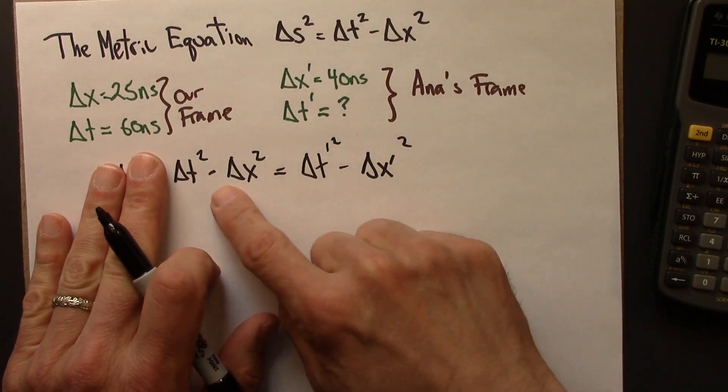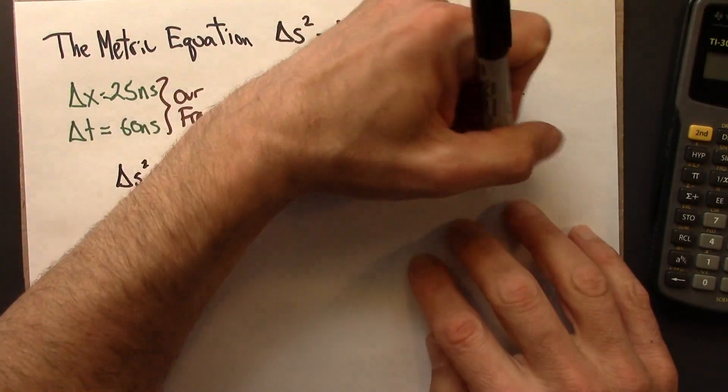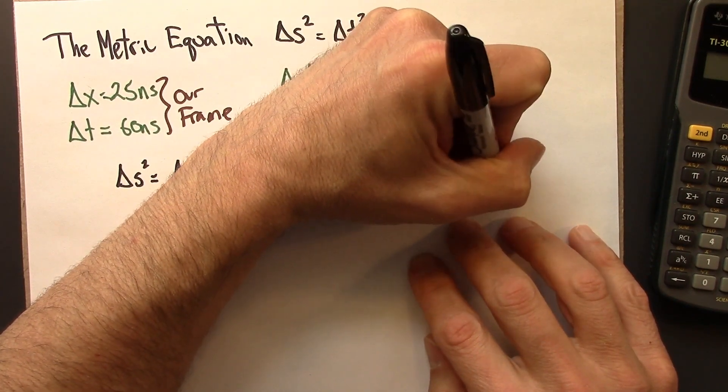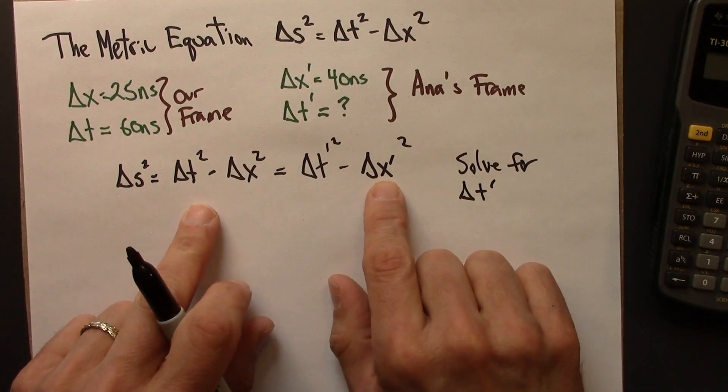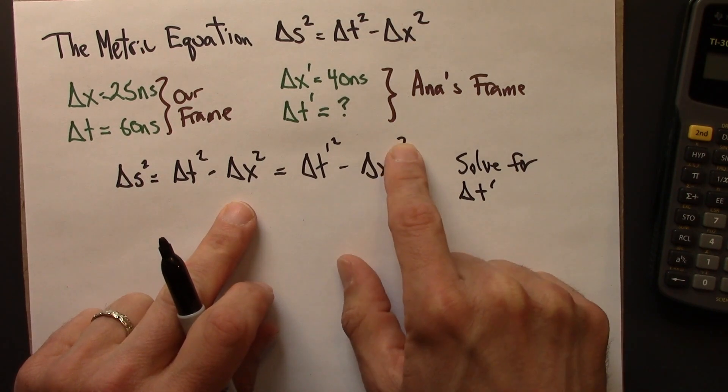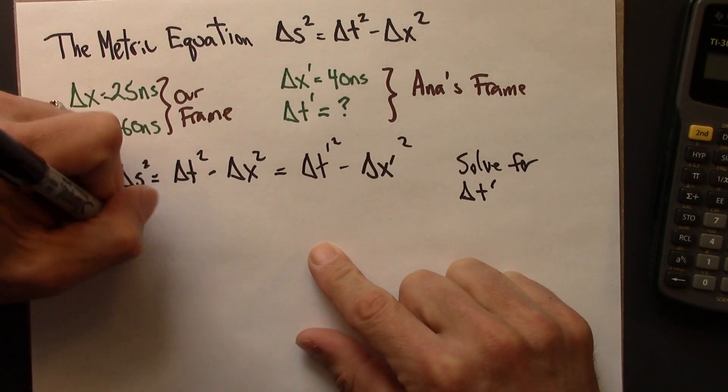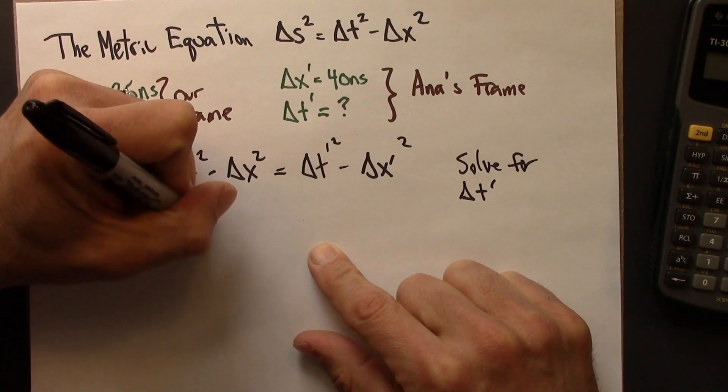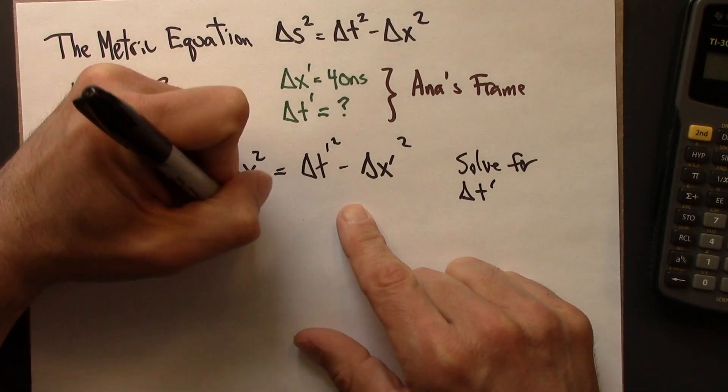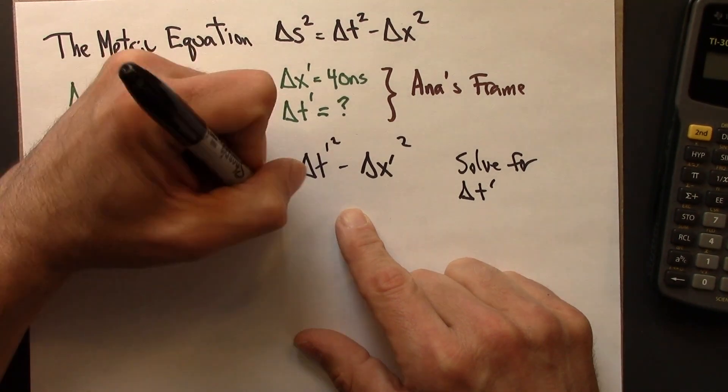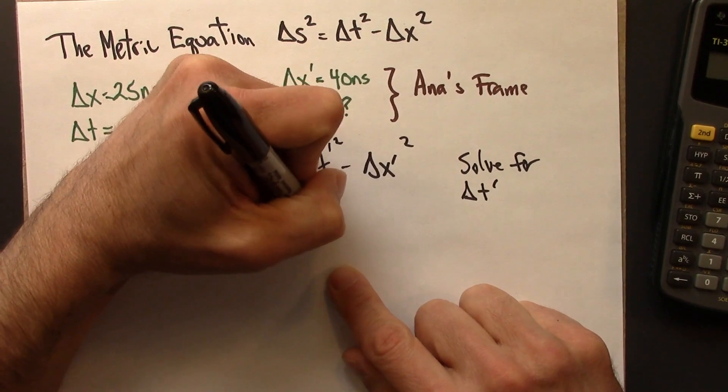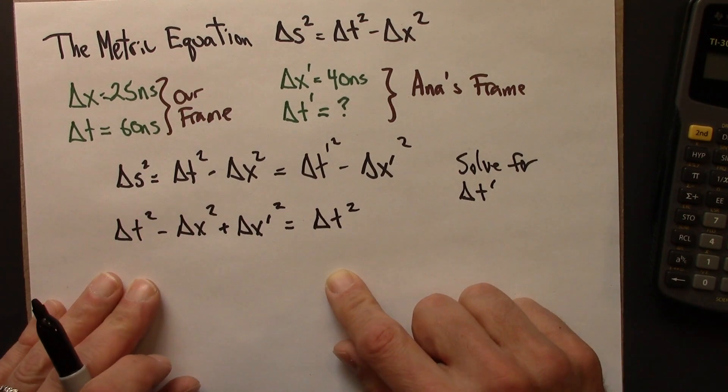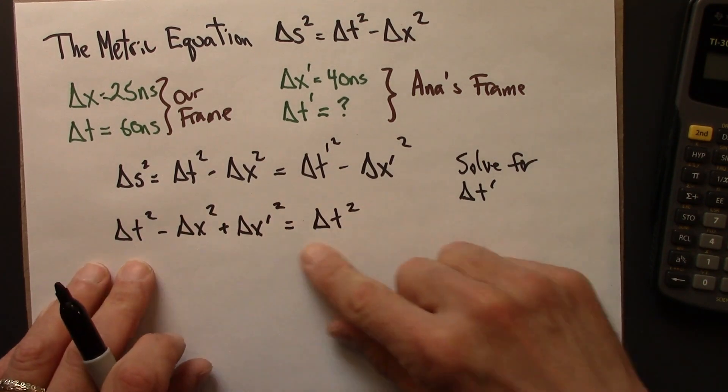So I'm going to take this equation and solve for delta t prime. I could do that by adding delta x prime squared to both sides. So then I'll have delta t squared minus delta x squared plus delta x prime squared, and that will equal delta t prime squared.